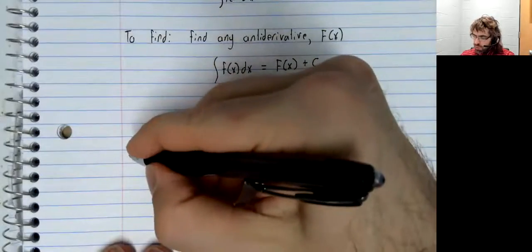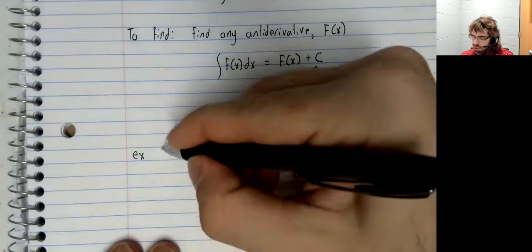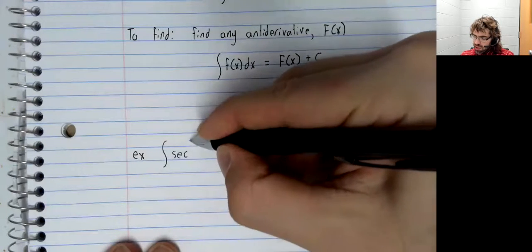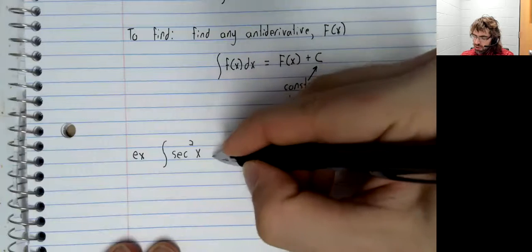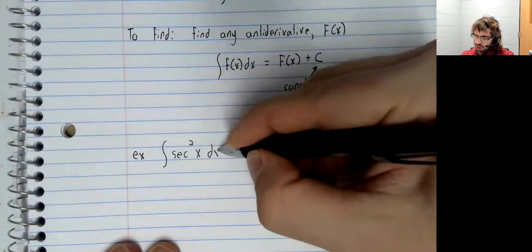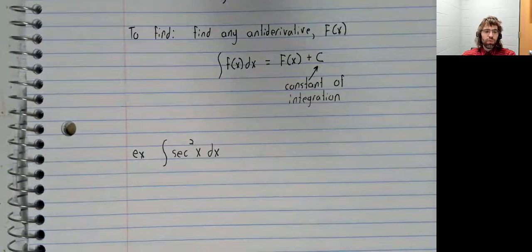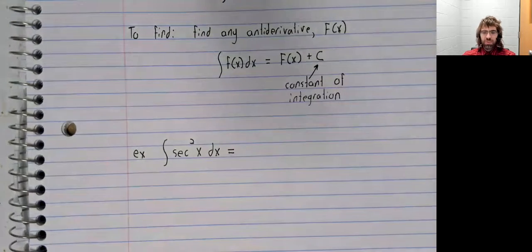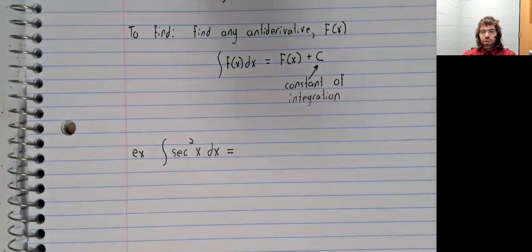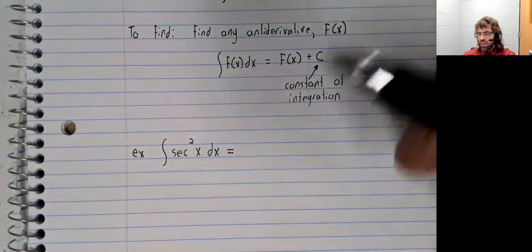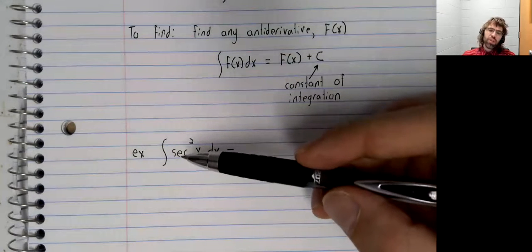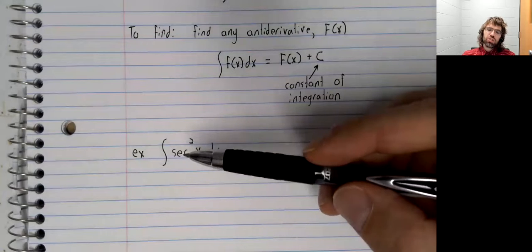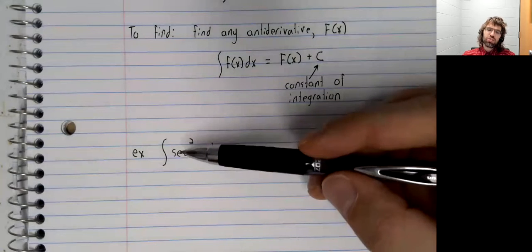So for example, the indefinite integral of secant squared. We pause and think: do we know an antiderivative of secant squared? Do we know a function that has secant squared as its derivative?